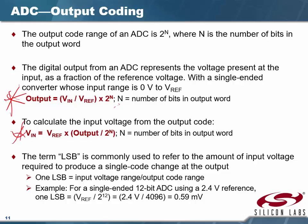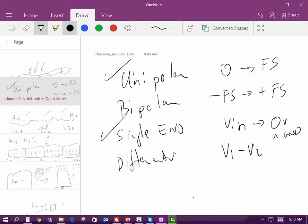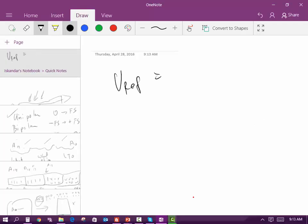Know these two formulas — hint hint hint. You will have a problem that says: for a single-ended 12-bit ADC using a 2.4 volt reference, what is the least significant bit value? These are the key formulas for converting between the ADC reading and the actual voltage.